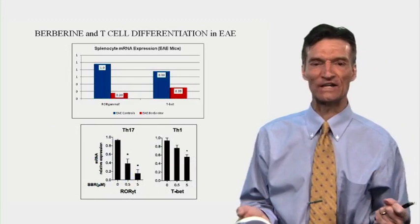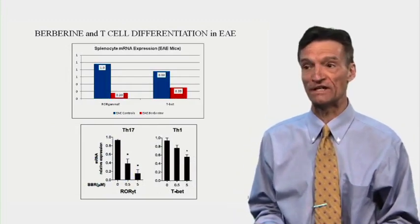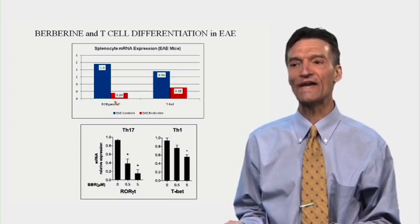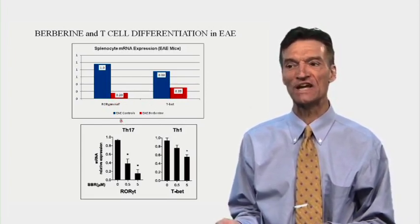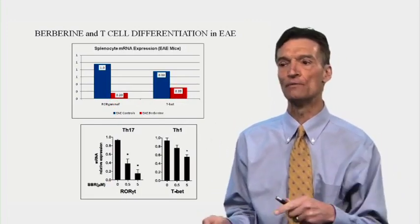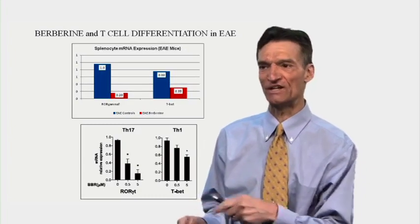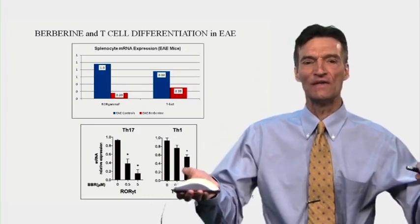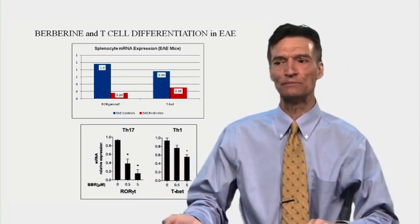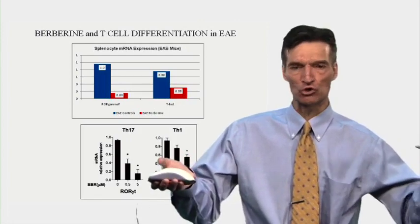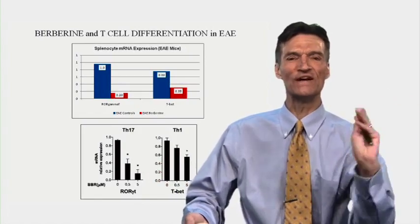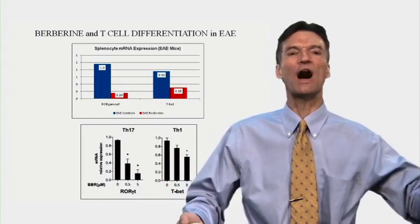If you take splenocytes — immune cells residing in the spleen — and stimulate them to proliferate, you see lower expression of RORγT, the transcription factor for Th17 lymphocytes, and less TBET, the transcription factor for Th1 lymphocytes. We're working at the level of transcription factors. If we can block activation of a transcription factor, we can block all of its downstream mediators. This is the beauty of nutritional medicine — we're working within Mother Nature's pathways. We don't have to block a number of enzymes with different drugs; we block their activation.